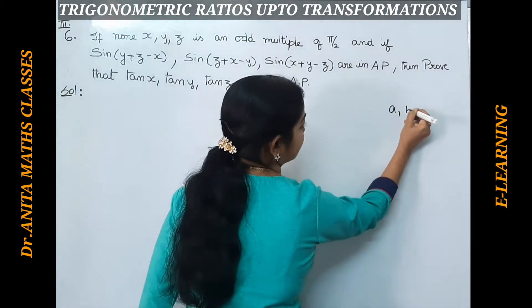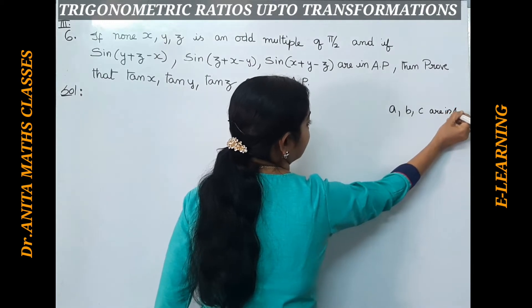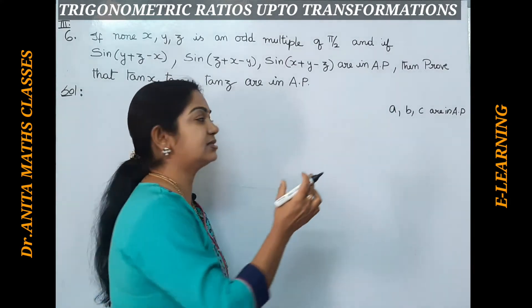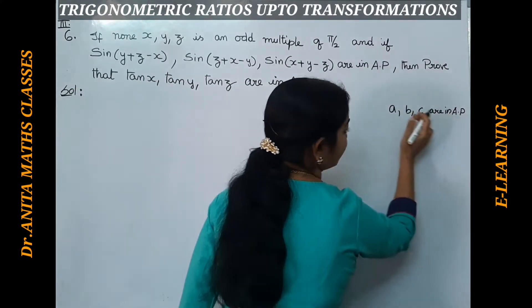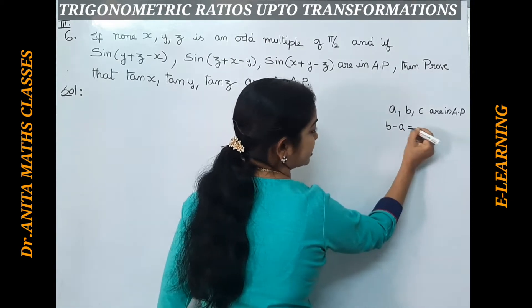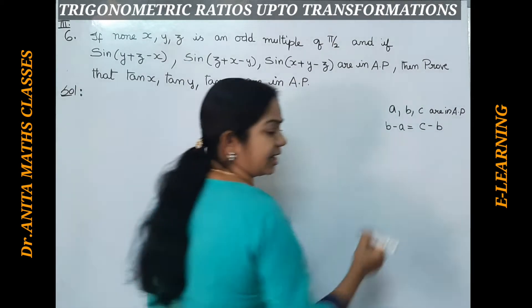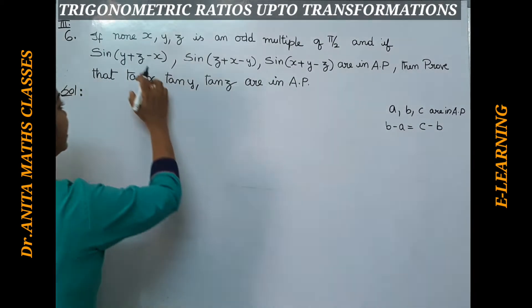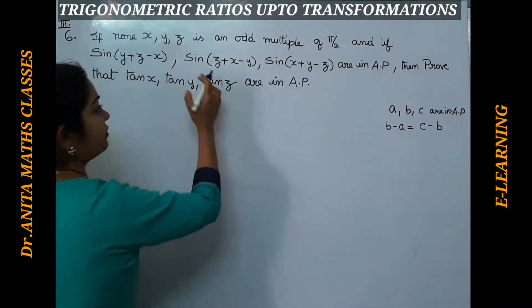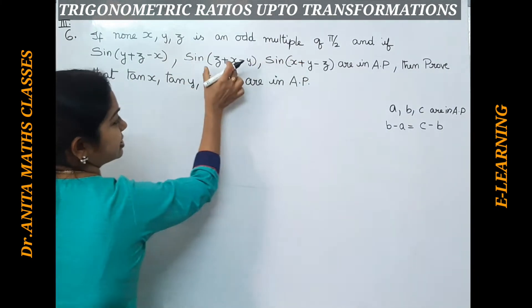We will get started with the given condition. In any AP, if three numbers a, b, c are in AP, the difference between terms must be common. That is, b minus a should be equal to c minus b. This is the condition for AP. Likewise, if these three sine values are in AP, we consider b minus a equals c minus b.